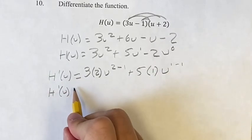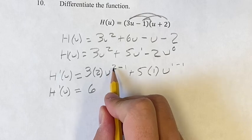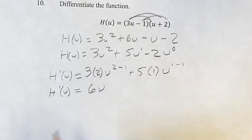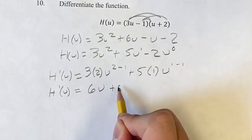So the derivative of h of u equals 3 times 2 is 6, u to the 2 minus 1 is 1, u to the 1 is just u. Plus 5.